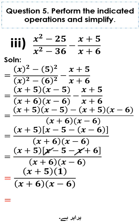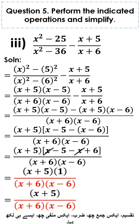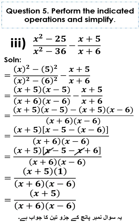This gives x plus 5 multiplied by 1 equals x plus 5, divided by x plus 6 into x minus 6. This is the answer of part 3 of question number 5.